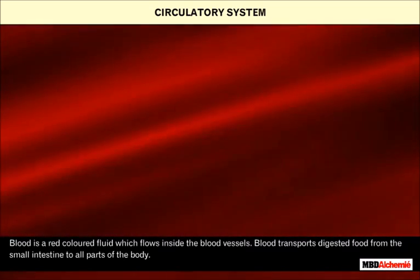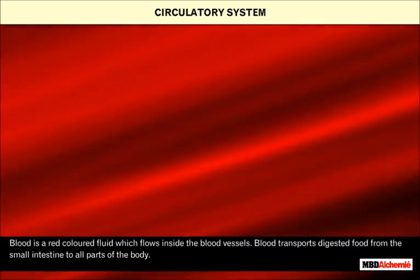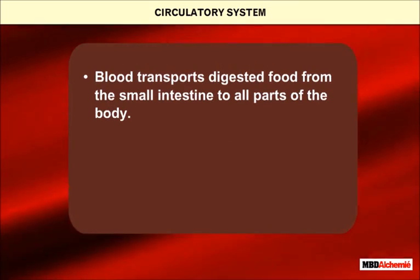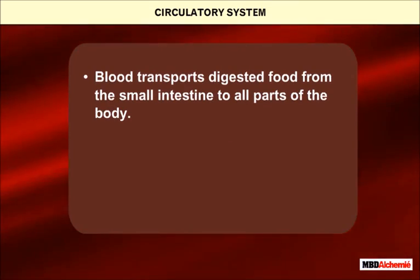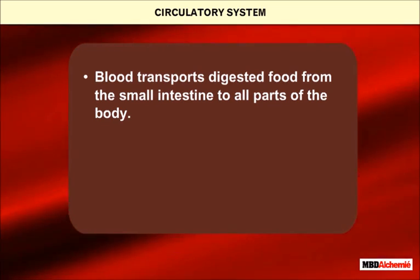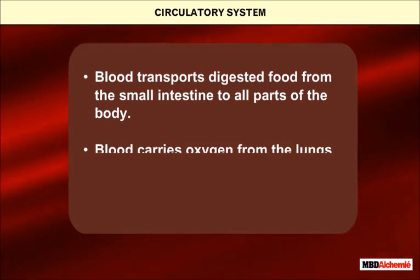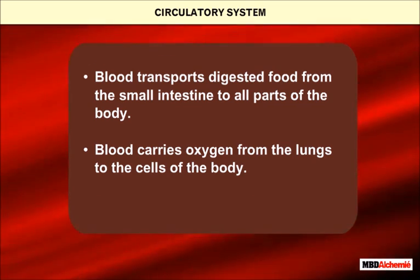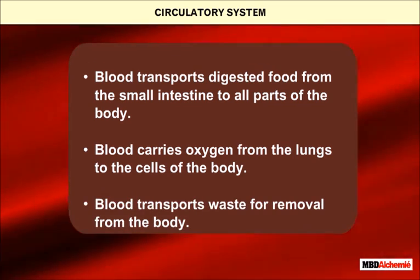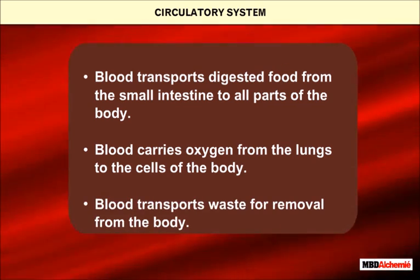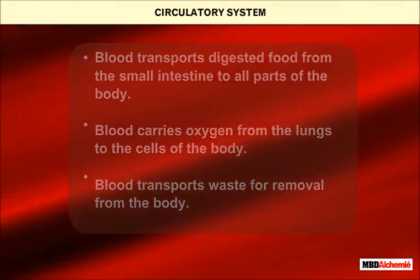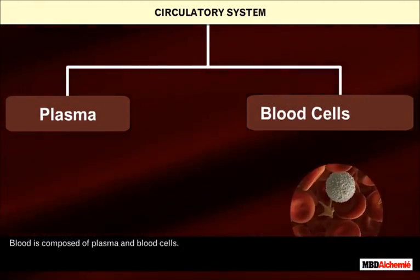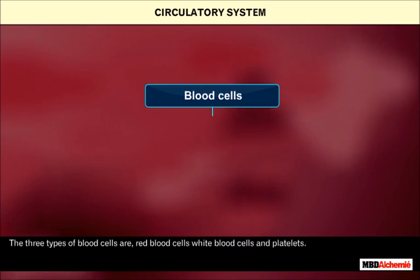Blood is a red colored fluid that flows inside the blood vessels. Blood transports digested food from the small intestine to all parts of the body. Blood carries oxygen from the lungs to the cells of the body, and blood transports waste for removal from the body.